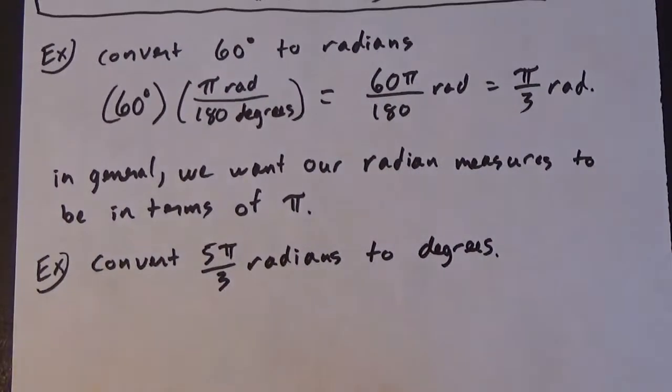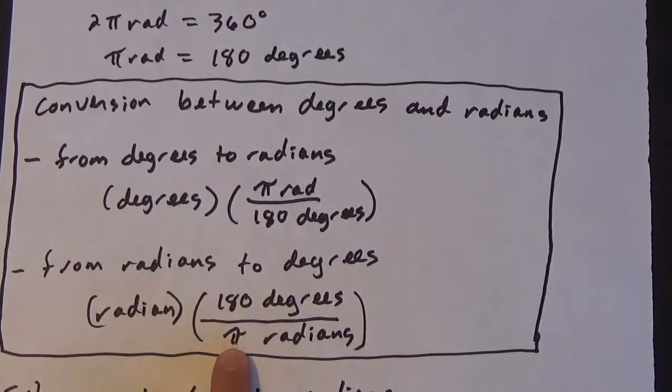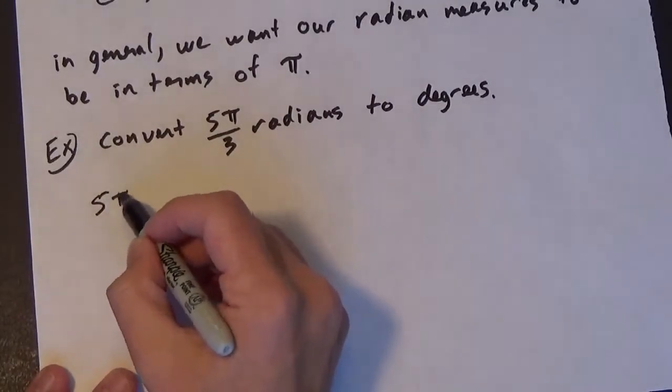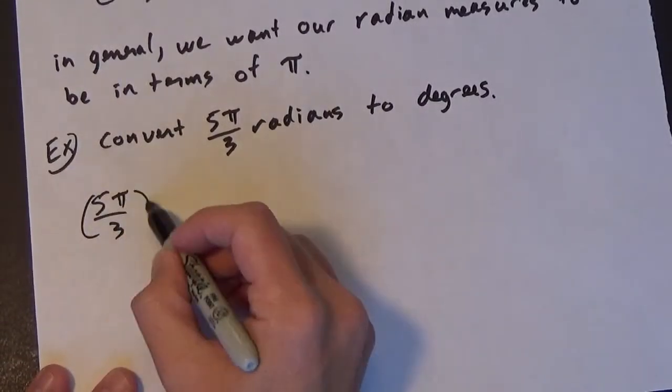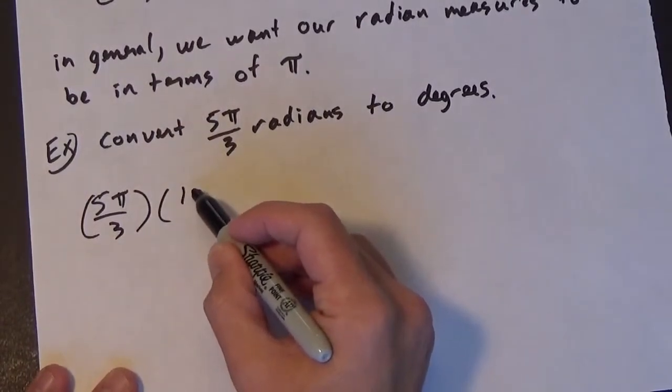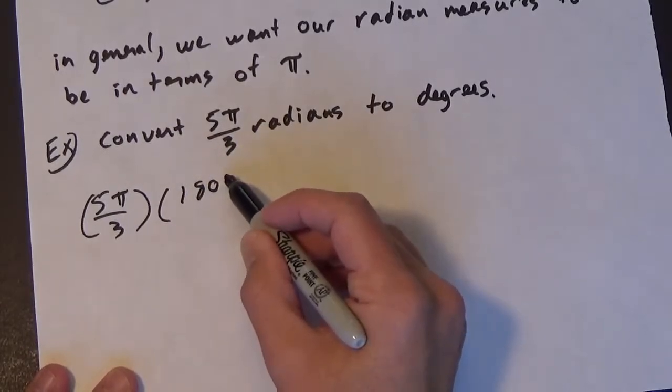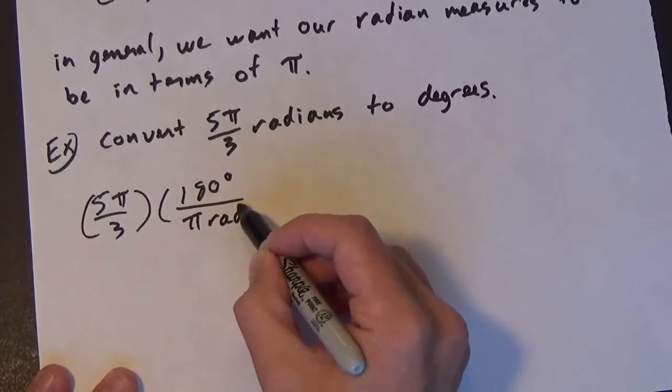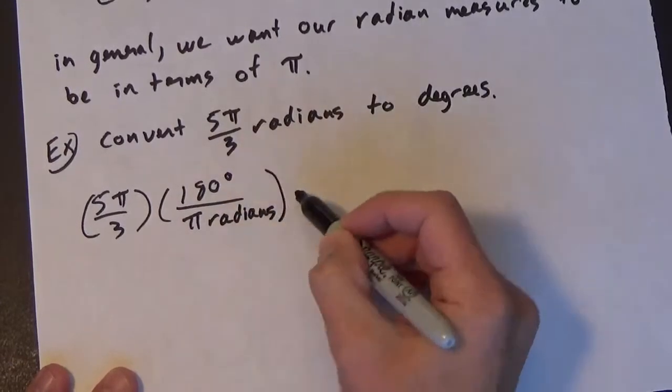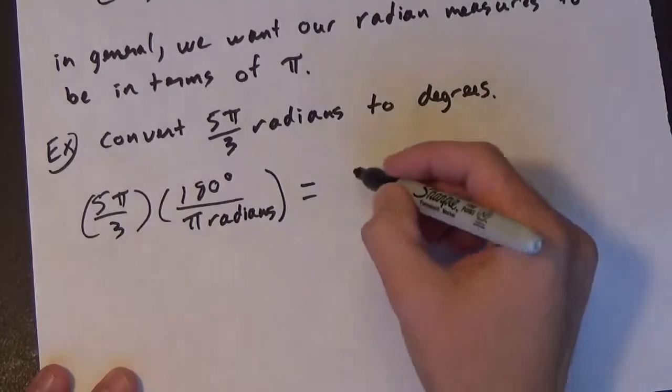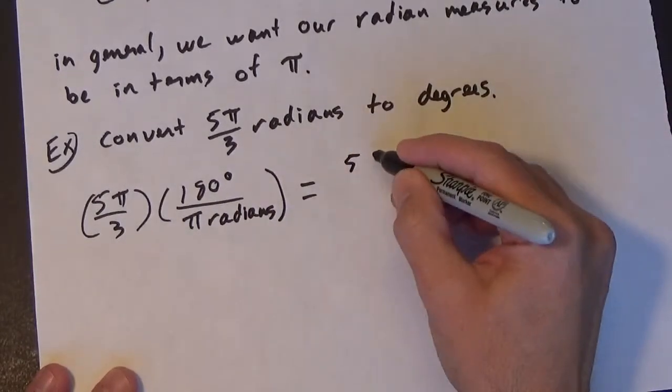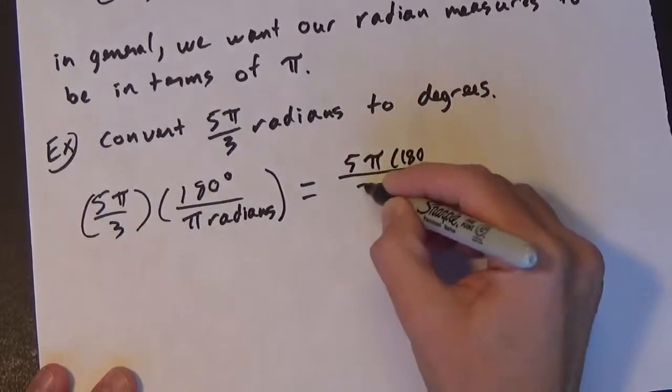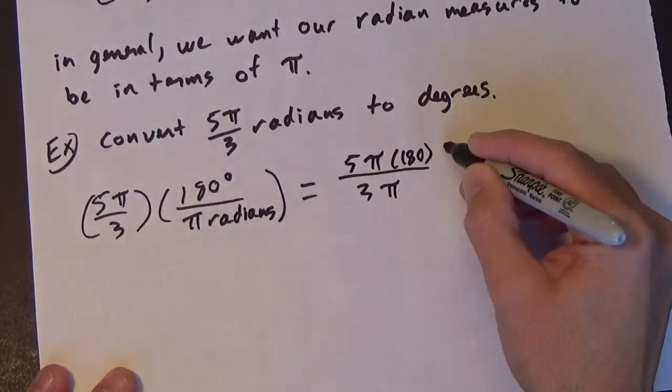Well, the conversion from radians to degrees is 180 degrees over pi radians. So we're going to have 5 pi over 3 times 180 degrees over pi radians. So this is going to be 5 pi times 180 over 3 pi. This will end up being degrees.